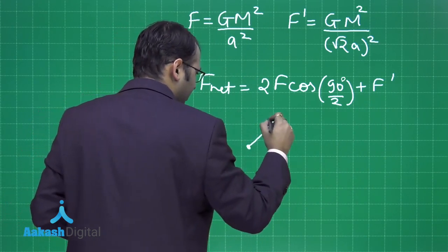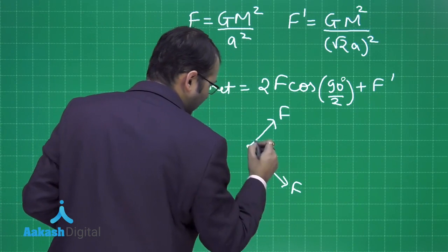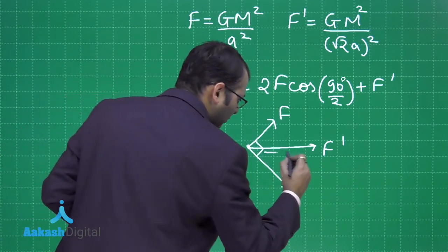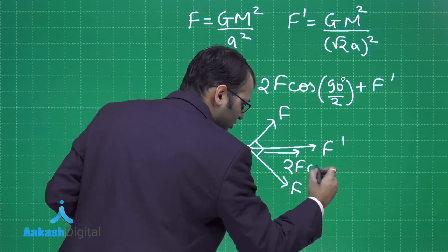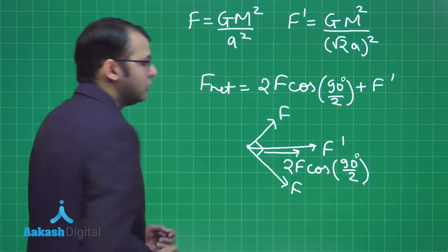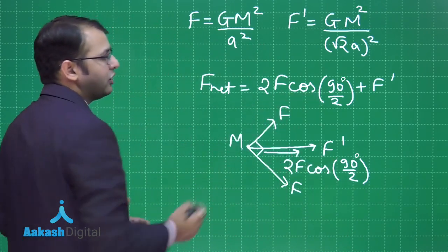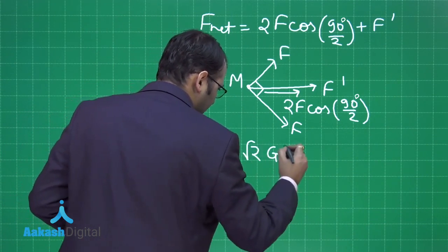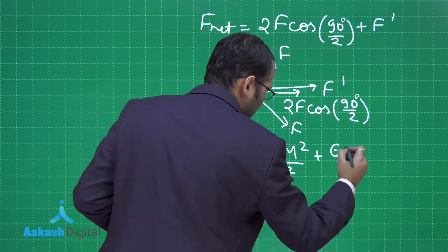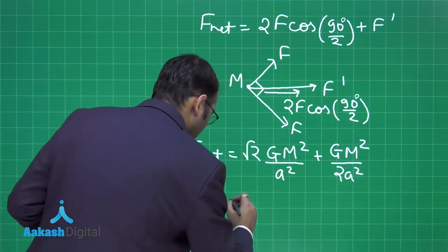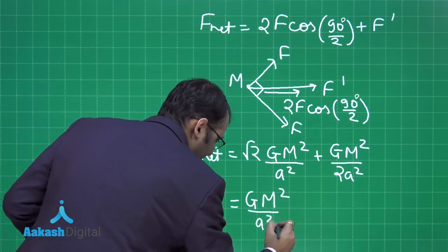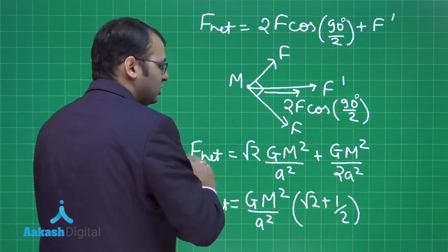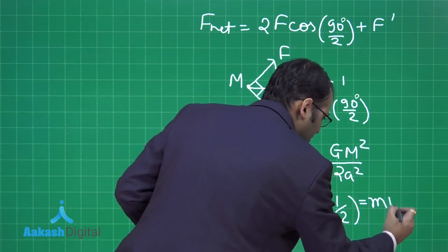If you see the mass M, one force is acting like this, the other being like this, and they are at 90 degree with each other, and one force is acting on them as F dash. So these two forces, if the resultant is taken, it will be along this direction, which will be 2F cos of 90 by 2. So the net force acting on this mass would be sum of these two forces. Now when you solve this further down, you will get F net as root 2 GM square by A square plus GM square by 2A square. This is GM square divided by A square into root 2 plus 1 by 2. This is the net force which is acting on that mass towards the right, and this force should be equal to MV square upon R.